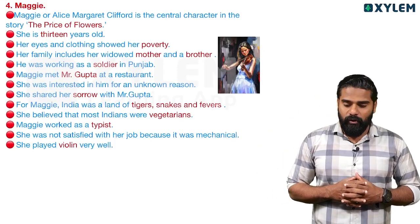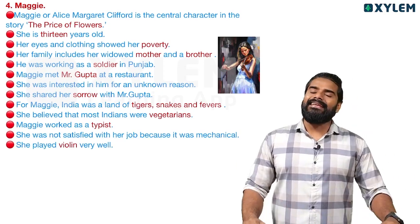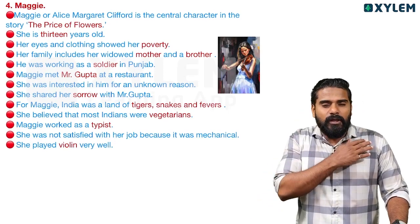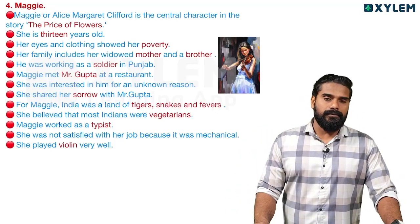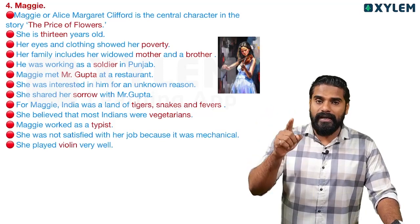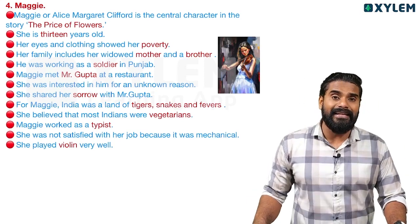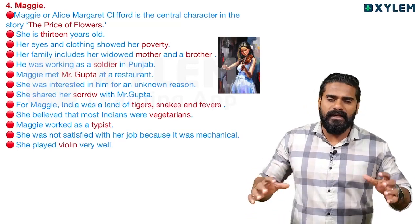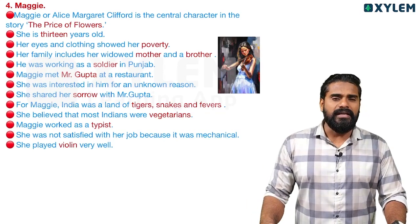Maggie, or Margaret Clifford, is the central character of the story 'Price of Flowers.' She is 13 years old. Her eyes and clothing showed her poverty. Her family includes a widowed mother and a brother. Her brother was working as a soldier in Punjab in the British Indian Army. Maggie met Mr. Gupta at a restaurant. She was interested in him for an unknown reason.